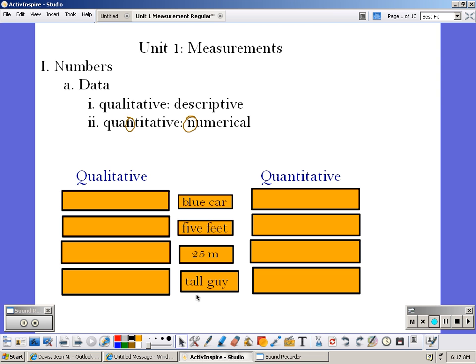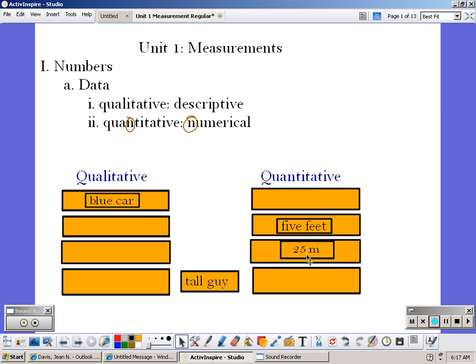So if we look at these examples, blue car, you're describing the car using words, so that's qualitative. Five feet. Five is a number, so that's quantitative. Twenty-five meters. Twenty-five is a number, so that's quantitative. A tall guy. You're describing the guy as tall, so that is qualitative.